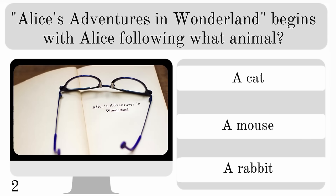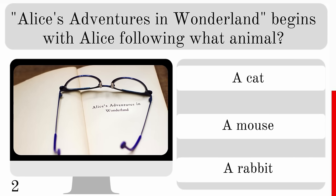Alice's Adventures in Wonderland begins with Alice following what animal? Does she follow a cat, a mouse or a rabbit? The answer is she follows the White Rabbit.